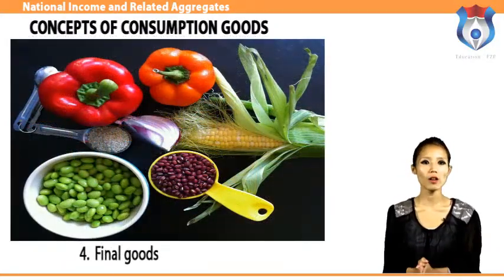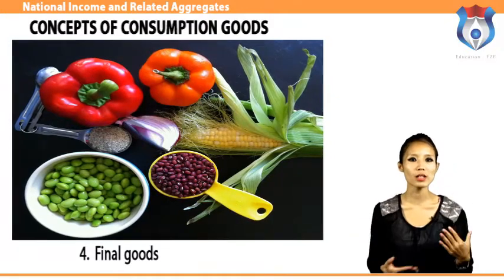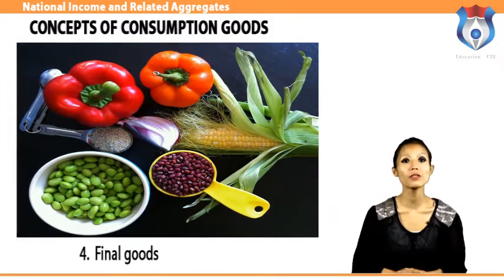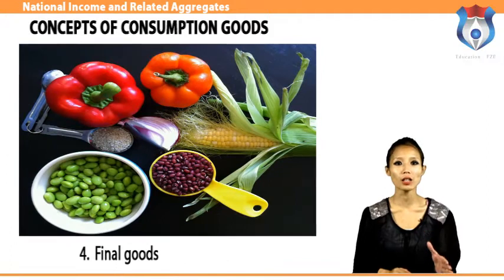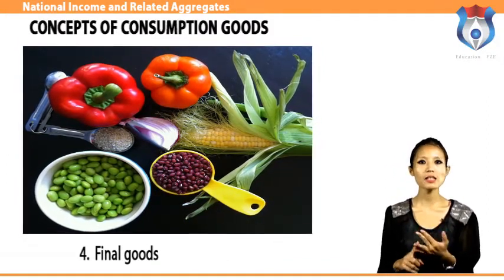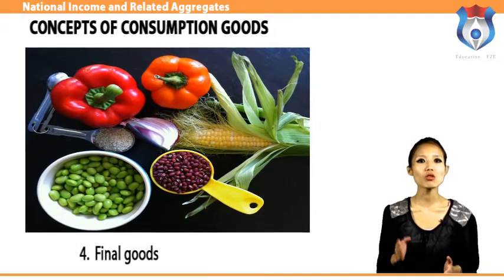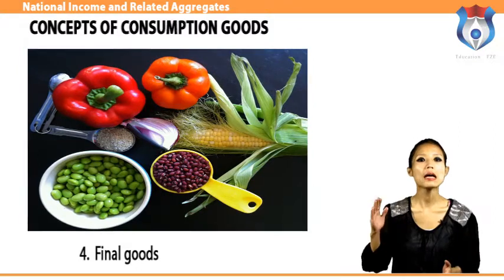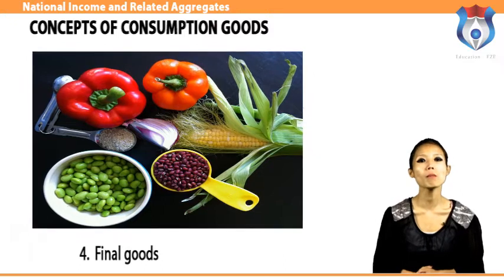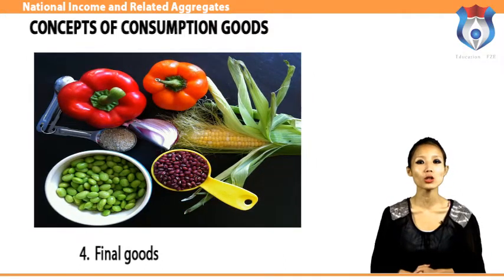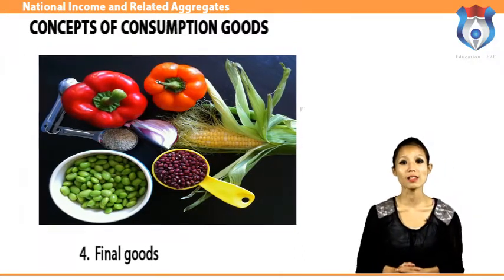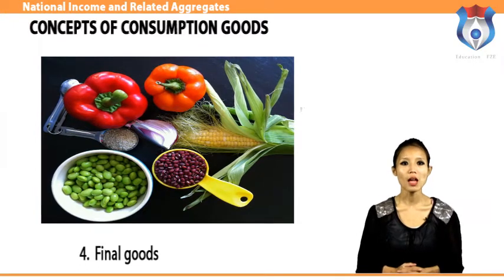A final good or service is one consumed by the end user that does not require any further processing. Final goods are purchased through the product market by the four macroeconomic sectors — household, business, government, and foreign — as consumption expenditure, investment expenditure, government purchases, and exports. Gross domestic product seeks to measure the total market value of final goods and services produced by the economy in a given period.